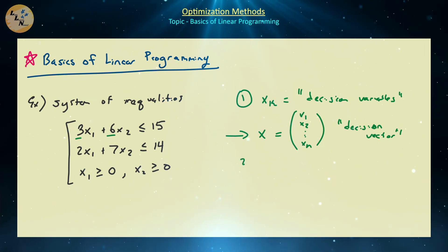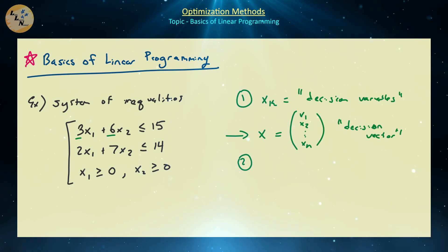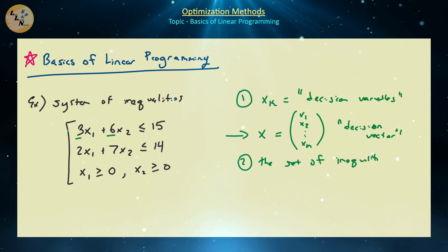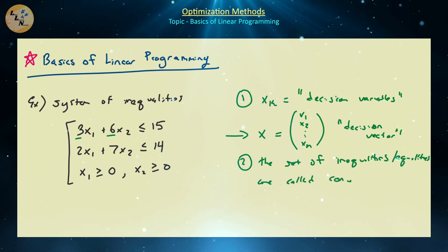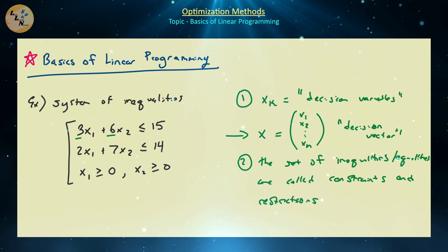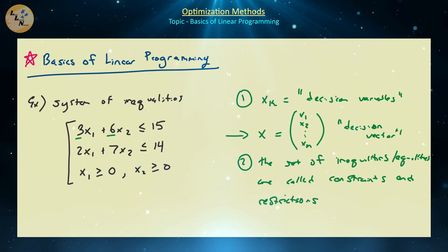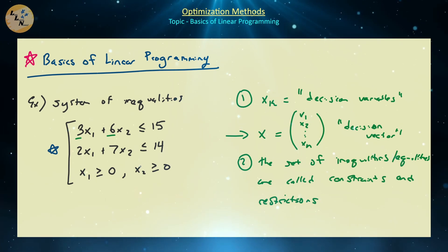The inequalities associated with these decision variables are usually called constraints and restrictions. The set of inequalities — or equalities, since we can change less-than-or-equal-to to equals or other relations — are called constraints and restrictions. We'll differentiate between constraints and restrictions in just a moment. Let's take a closer look at these particular inequalities.